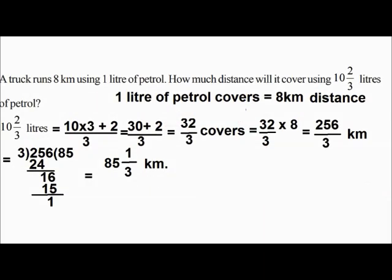A truck runs 8 kilometers using 1 liter of petrol. How much distance will it cover using 10 and 2 by 3 liters of petrol? Convert 10 and 2 by 3, a mixed number, into improper fraction — that becomes 32 by 3. It covers 32 by 3 into 8, that is 256 by 3 kilometers. Simplify by dividing 256 by 3: it becomes 85 and 1 by 3 kilometers.